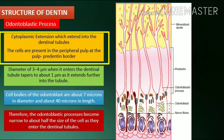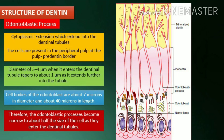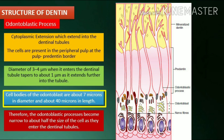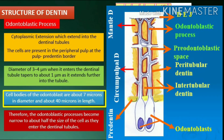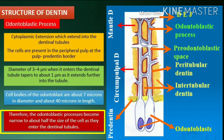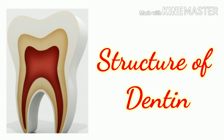The cytoplasmic extensions of the odontoblast which extend into the dentinal tubules are called odontoblastic processes. The cells are present in the peripheral pulp at the pulp-predentin border. The process has a diameter of 3 to 4 microns when it enters the dentinal tubule and tapers to about 1 micron as it extends further into the tubule. Cell bodies of the odontoblast are about 7 microns in diameter and 40 microns in length, so the odontoblastic processes become narrow to about half the size of the cell as they enter the dentinal tubules.